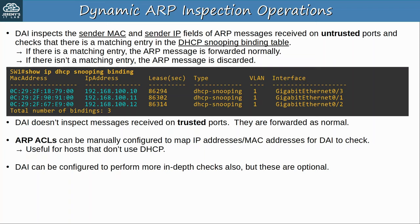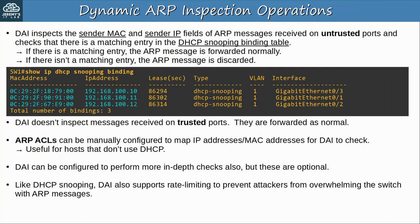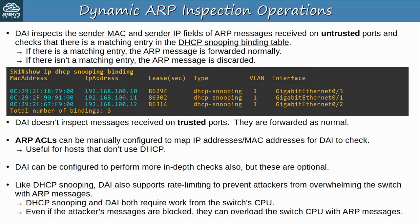In addition to the Sender MAC and Sender IP fields, DAI can be configured to perform more in-depth checks, but these are optional. Like DHCP snooping, DAI also supports rate limiting to prevent attackers from overwhelming the switch with ARP messages. Both DHCP snooping and DAI require work from the switch's CPU, so even if the attacker's messages are blocked, they can still overload the switch CPU by sending a ton of ARP messages. If the attacker tries to do that, rate limiting will disable the interface — a useful mitigation technique.